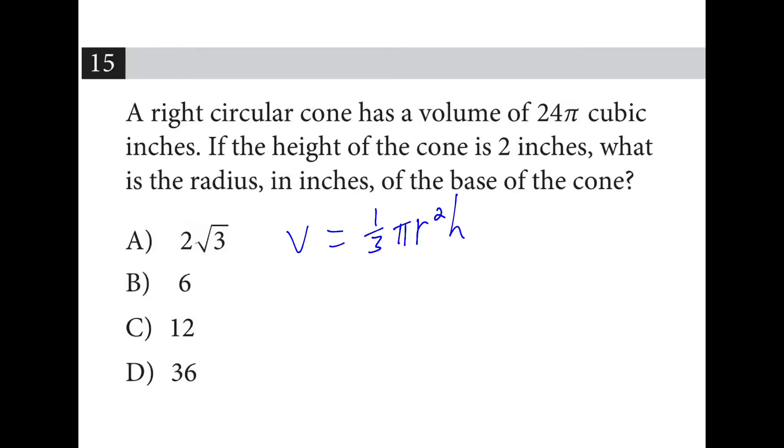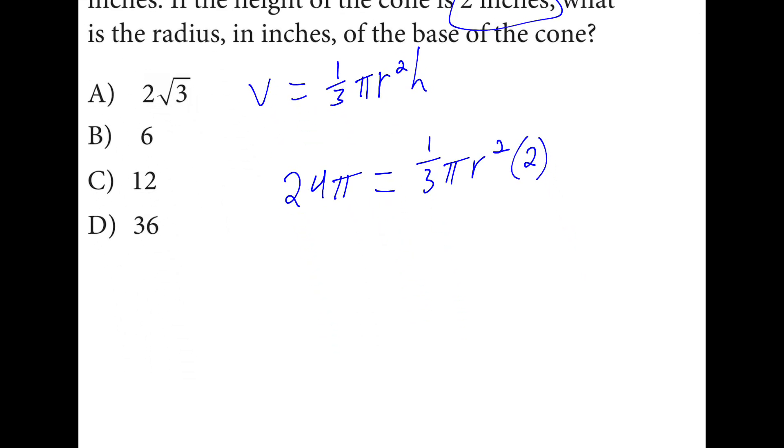From the formula sheet, a right circular cone has this formula. And they tell us the volume and the height. We can plug in 2 and 24π there. If we divide both sides by π, we have 24 is equal to 1 third times r squared times 2.